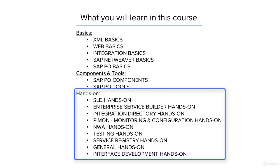Finally, in the hands-on section, you will learn how to use each of the options in the tools. I will show you how to configure your system with Java software and start using these tools on your local machine. You will learn to use SLD, ESR, IED, Service Registry, NWA and PIM1 tools — generally all the tools available in SAP PO. In the end, you will learn how to build one end-to-end file-to-file based interface with all the knowledge we have learned.